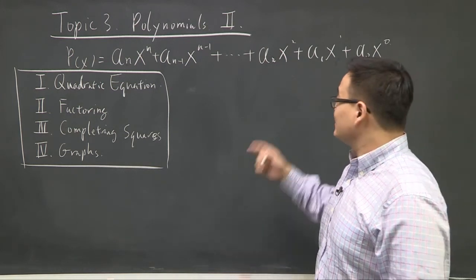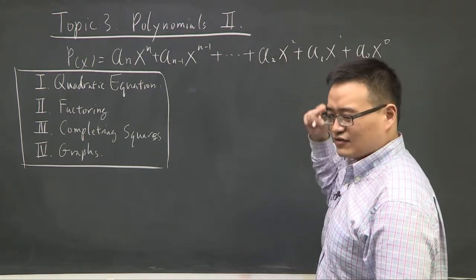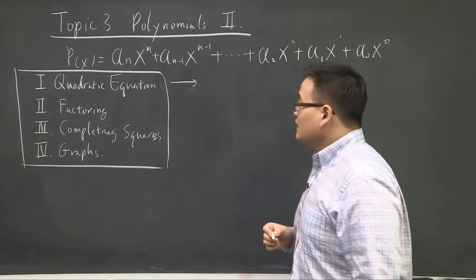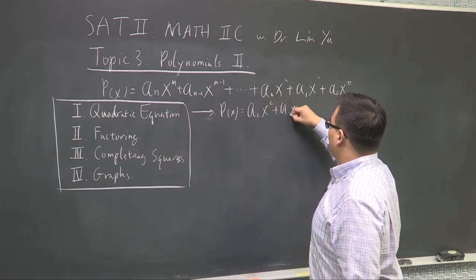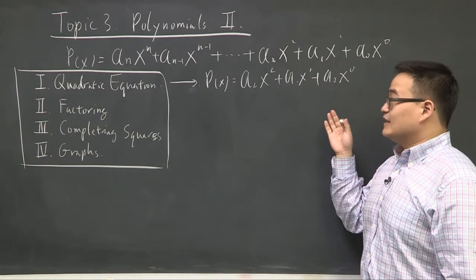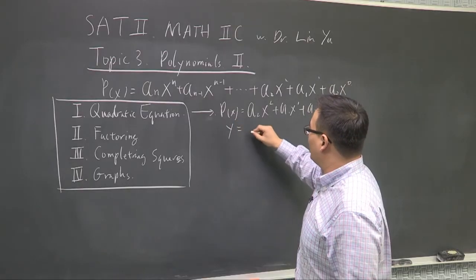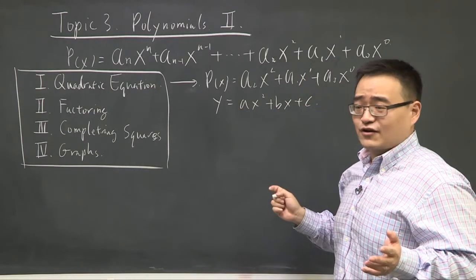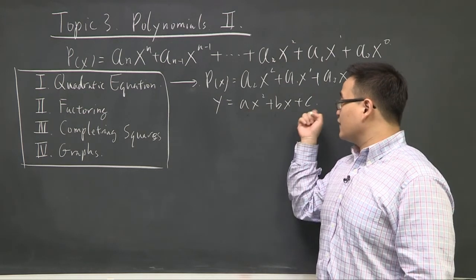By logic of progression, we're going to talk about the next higher level polynomial, which has x squared. That looks awfully familiar — we call this a quadratic equation. We think of quadratic equations in a polynomial sense as a₂x² + a₁x + a₀, but really what you're more familiar with is ax² + bx + c. This is the one we're used to: y = ax² + bx + c.